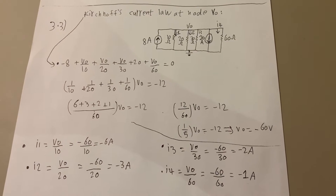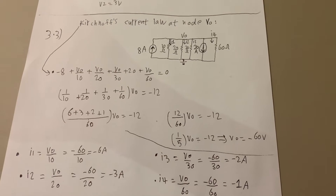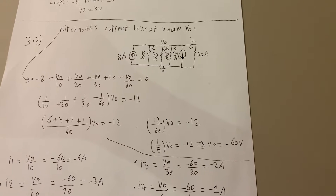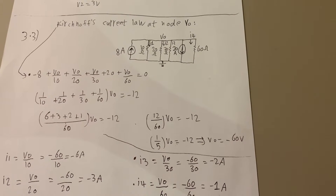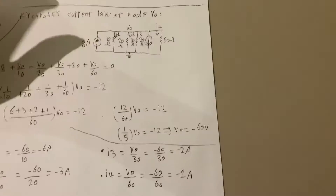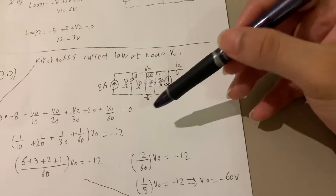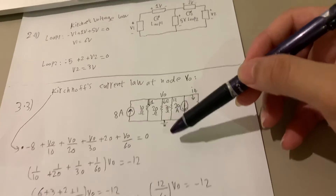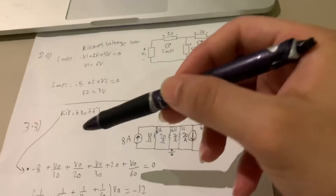In this video, question 3.3, we will use Kirchhoff's Current Law. We have only one node, V0; the second node is the ground, so it is equal to zero. V is equal to zero, so Kirchhoff's Current Law states that...